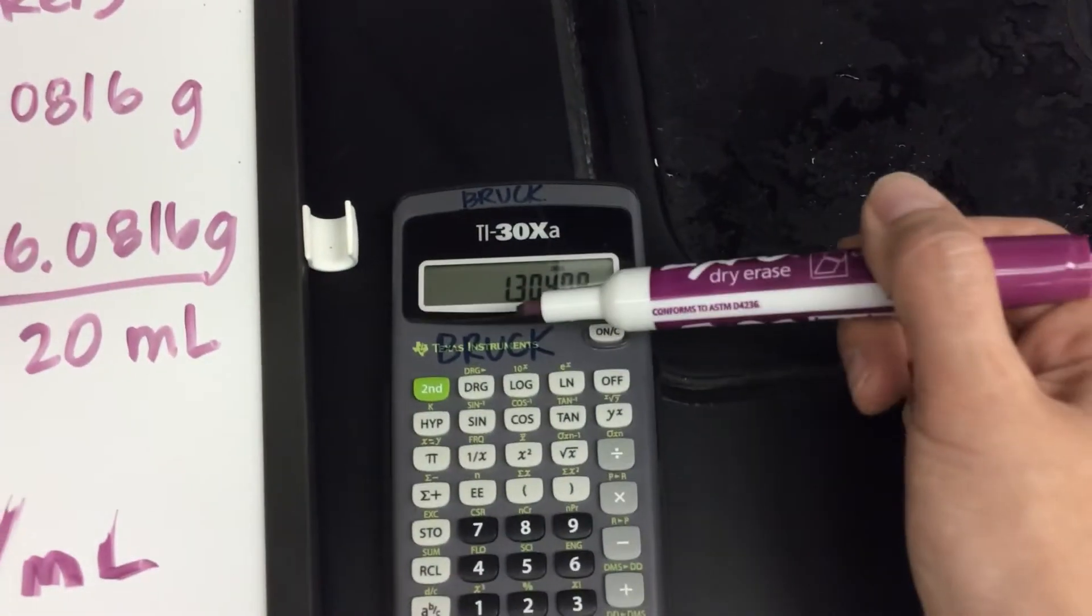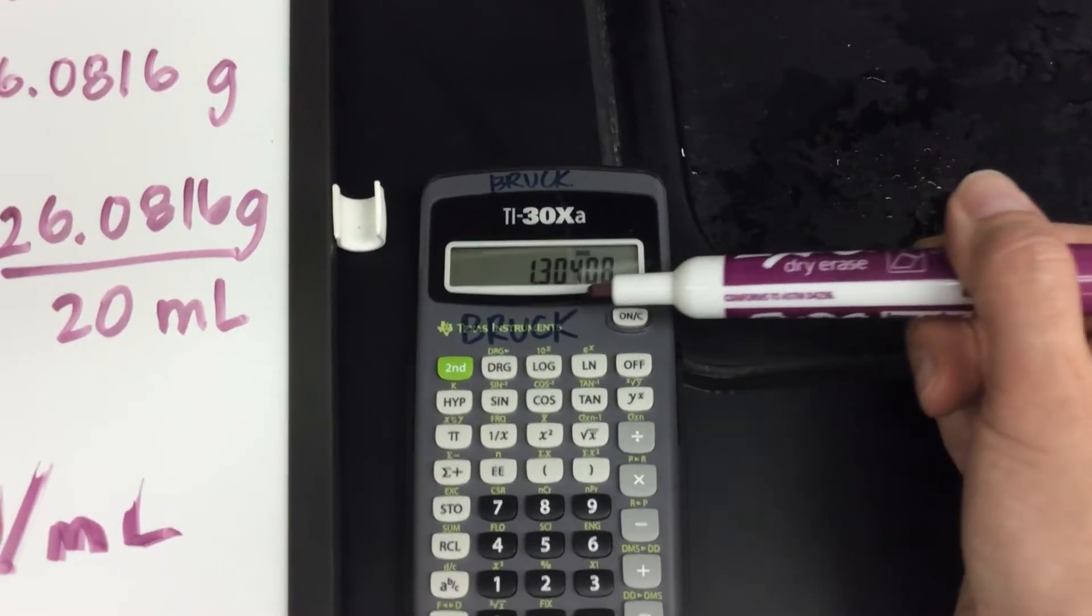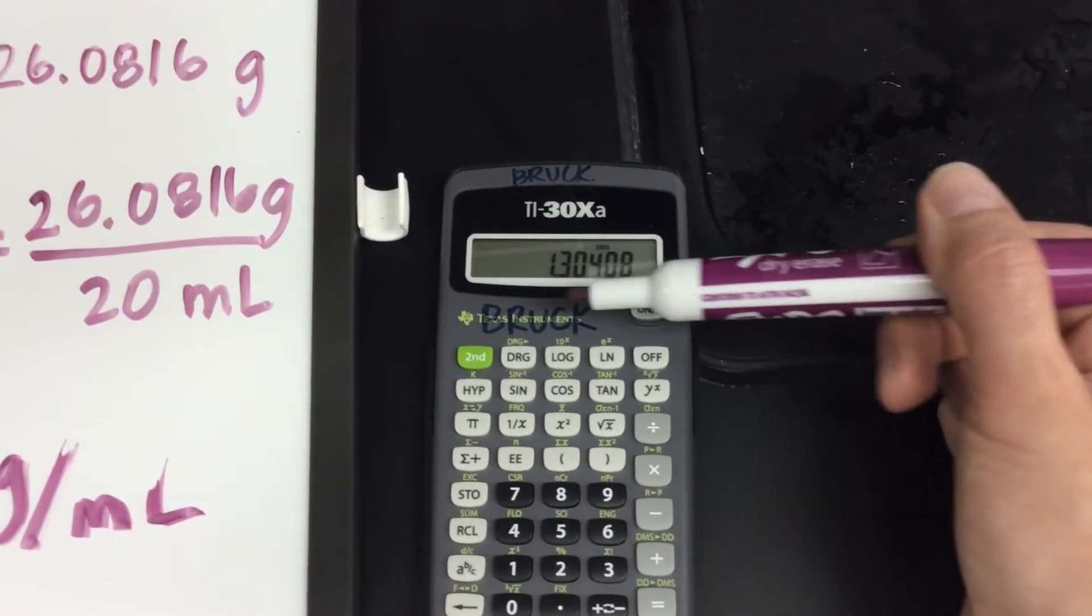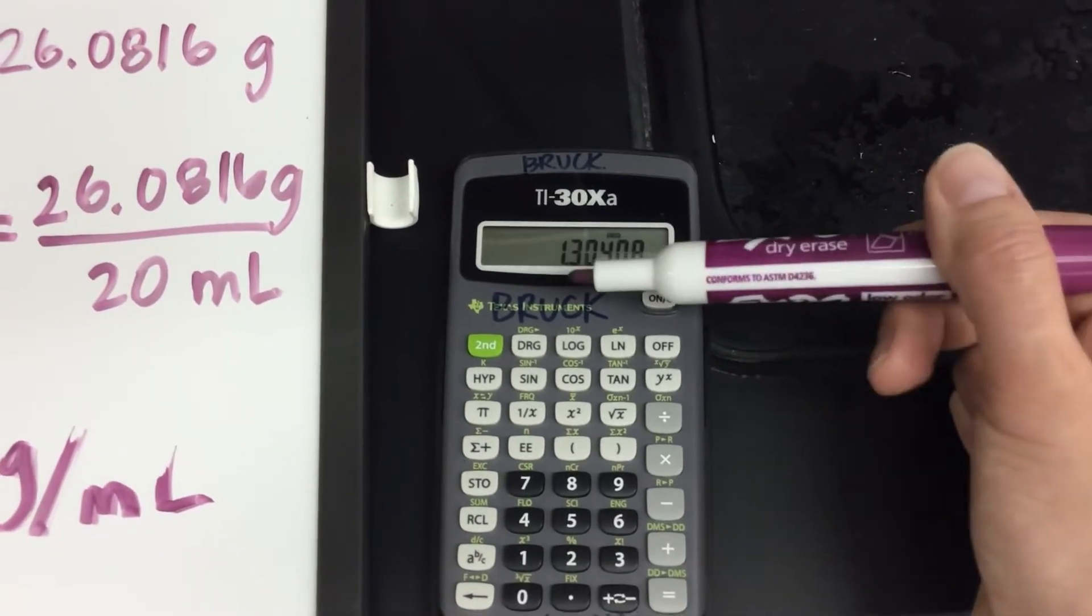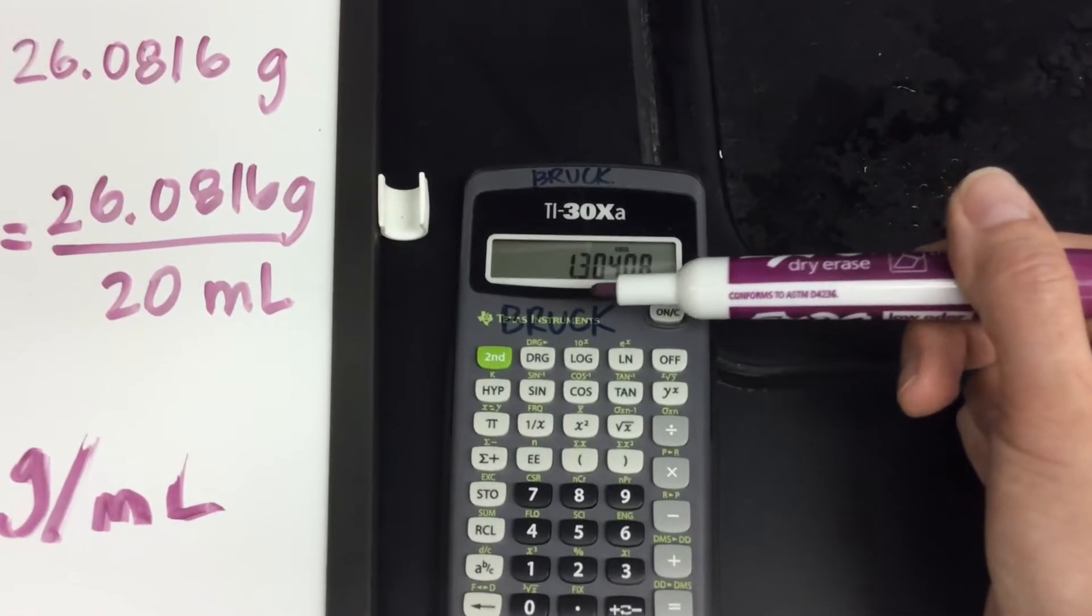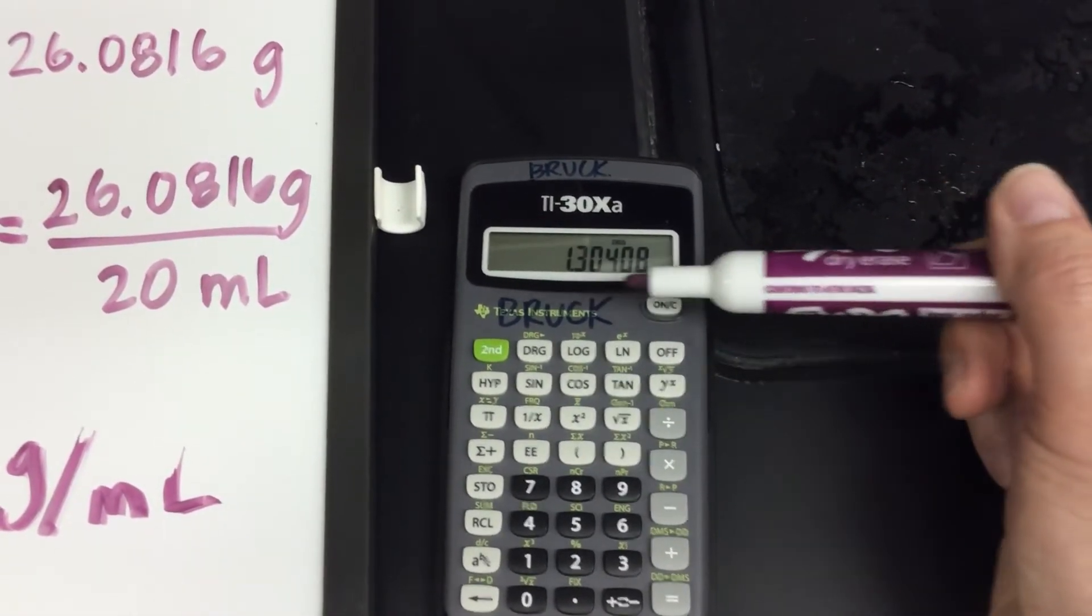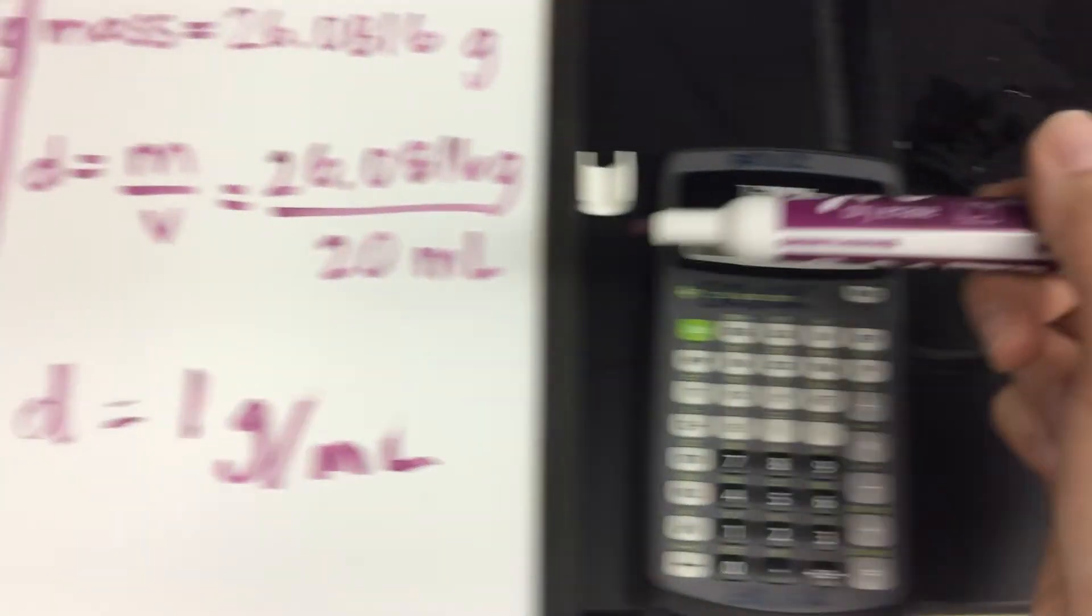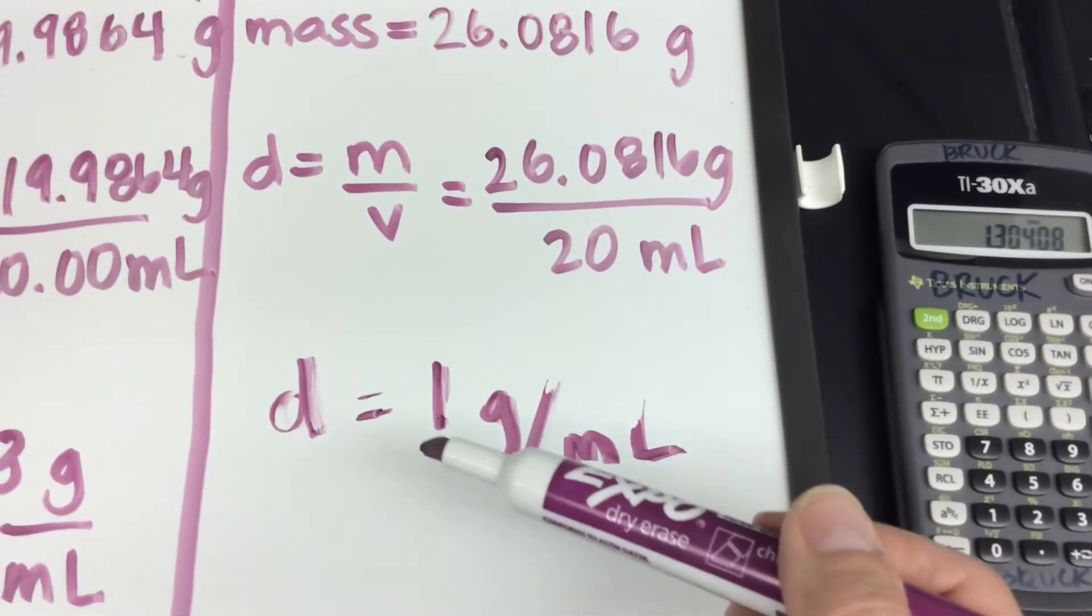No decimal places. Even though the calculator gives them to me, just because the calculator gives them to me, doesn't mean that I'm allowed to use them. Right? So these all exist as part of mathematics. But in terms of the answer that I report, I can't include them.